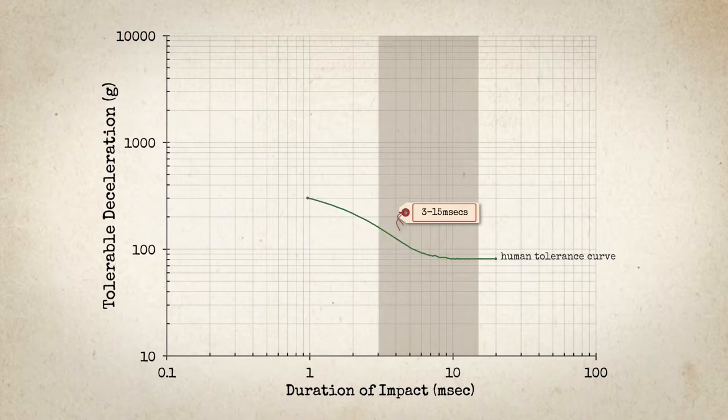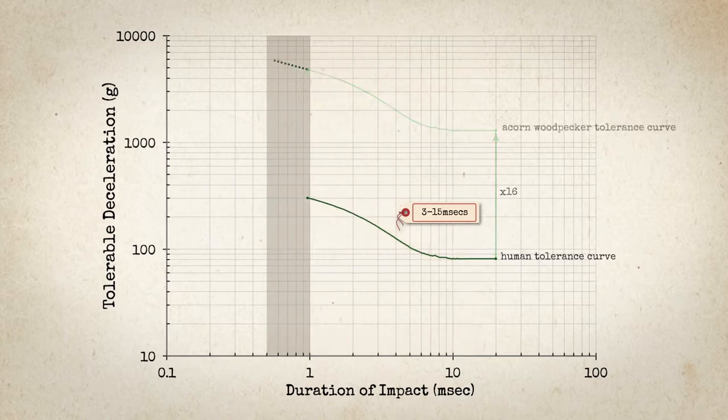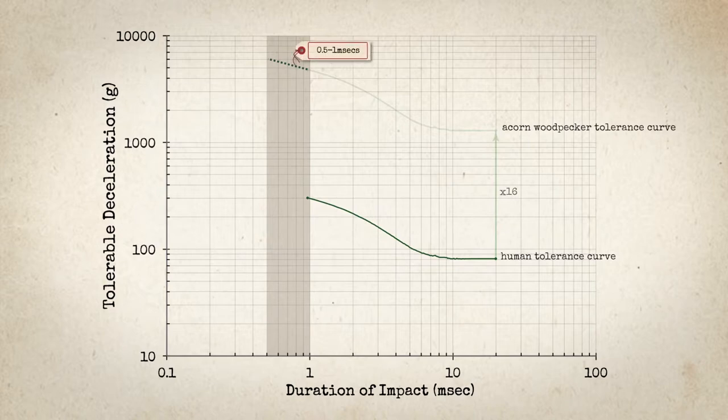And we can take this curve here for the humans, and we can simply scale it up by our factor of 16, and then we remember that the typical duration of the acorn woodpecker head impact was between half a millisecond and one millisecond.